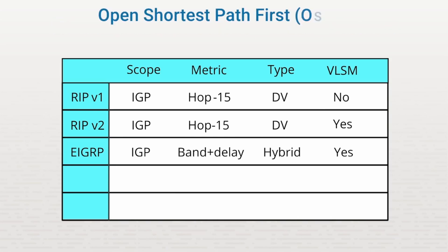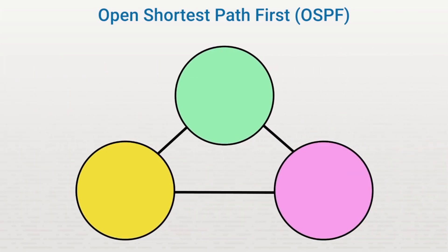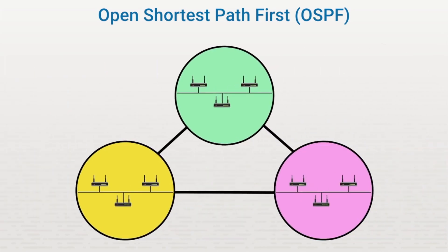Another protocol is called Open Shortest Path First, or OSPF. OSPF is also an IGP and uses link cost as its metric. OSPF is a link state method that supports Variable Length Subnet Masks. It's designed for networks larger than RIP can support. With OSPF, your private network is divided into different areas, and each area can contain multiple subnets that are linked together.